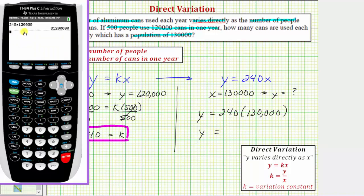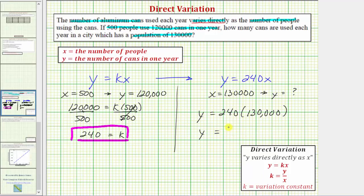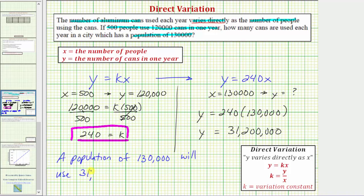Going to the calculator, 240 times 130,000 equals 31,200,000. So, now we know a population of 130,000 will use 31,200,000 cans in one year.